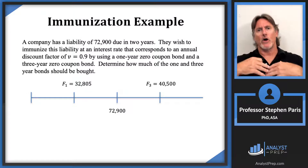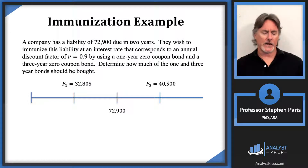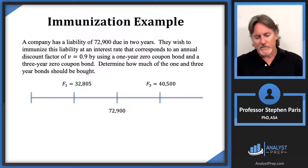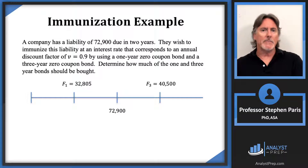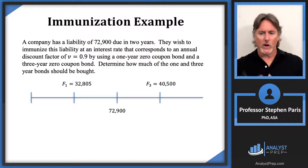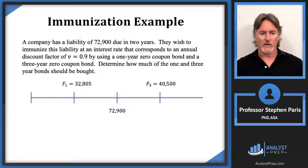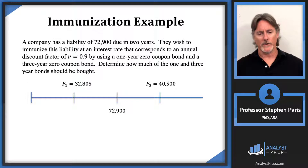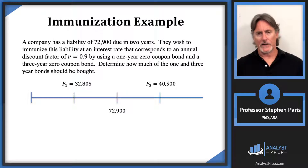Rather than letting N be the number of $1,000 face-value bonds and working through the arithmetic, it's much easier to let cap F1 be the total face amount directly and find F1 = $32,805. These two approaches are mathematically equivalent.